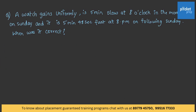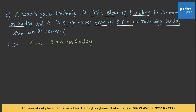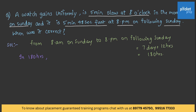Here is the next model: the delay between an interval of time is given and we are asked when the time is correctly shown. A watch gains uniformly — it is 5 minutes slow at 8 o'clock in the morning on Sunday, and it is 5 minutes 48 seconds fast at 8 pm on the following Sunday. The time gap from 8 am Sunday to 8 pm the following Sunday is exactly 180 hours.